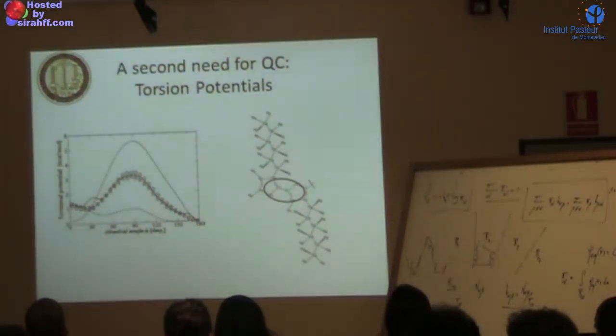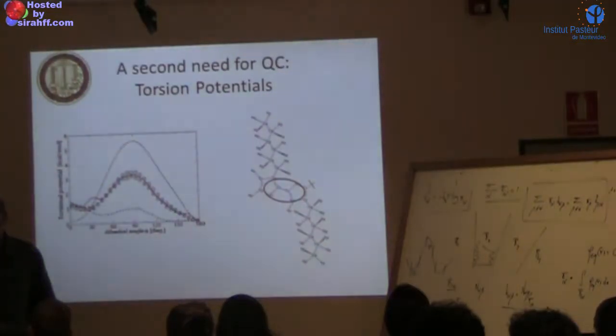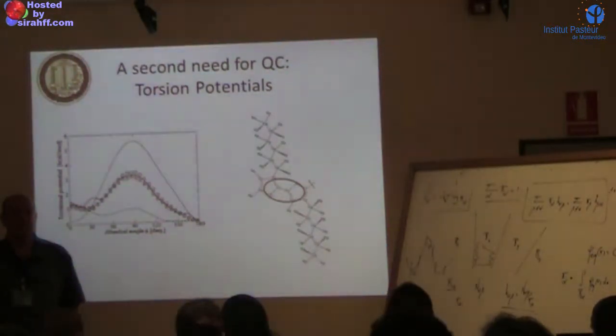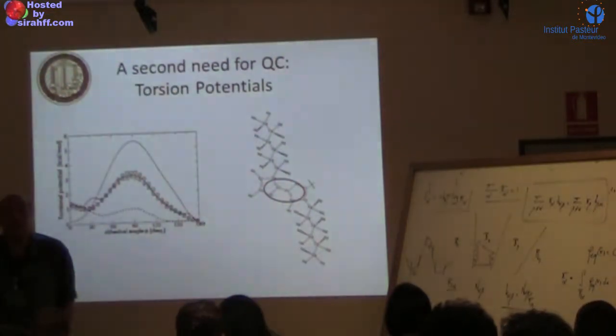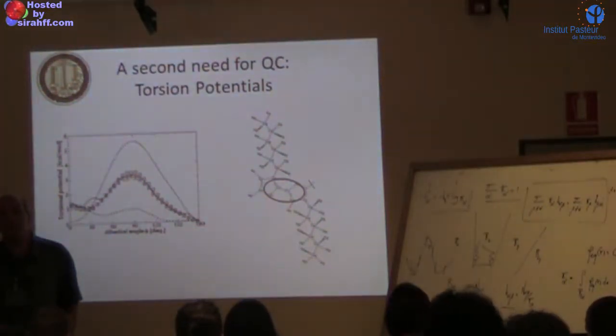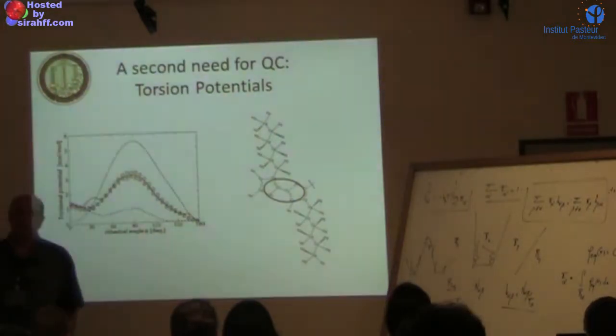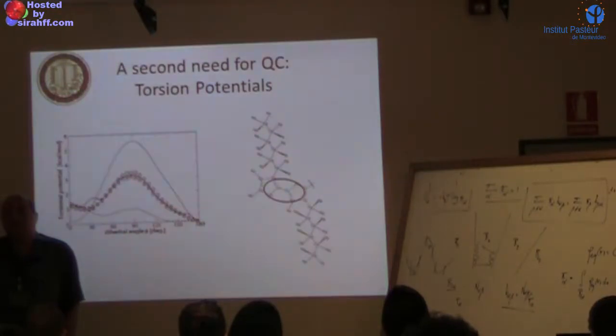The problem was when we started with the original simulation, the original model compared to experiments didn't agree. There are experiments on pi-stacking of P3HT which wouldn't fit - you couldn't reproduce them with the existing potential. So we had to go back and get the right torsional potential. Otherwise the whole coarse-graining effort would be useless.